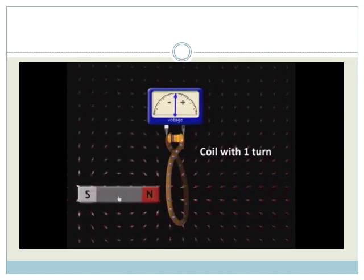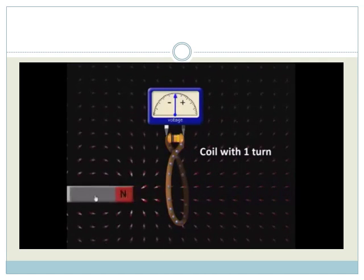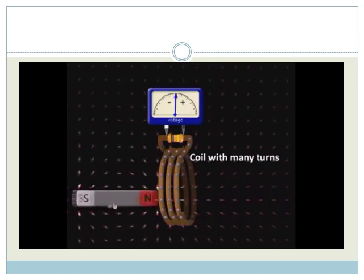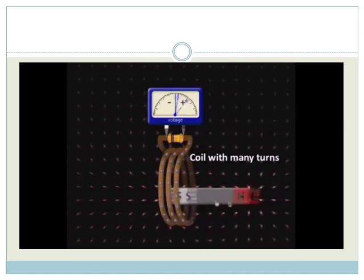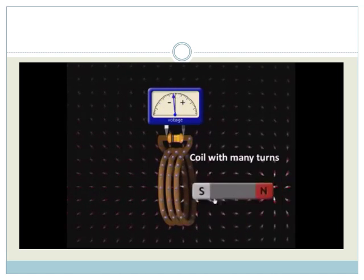First, I insert the bar magnet into the first coil, and I see that voltage is produced. Now, let's try the second coil with many more turns. Wow, look at that. Our hypothesis was correct. More turns produced more voltage.